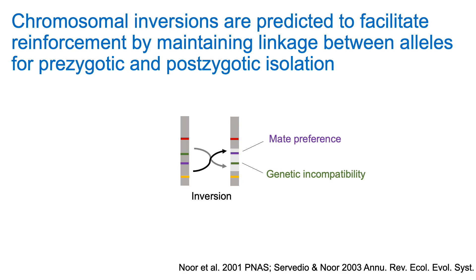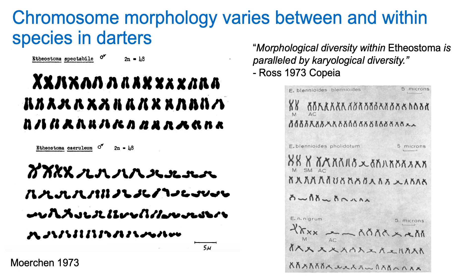Theory predicts that chromosomal inversions could play a particularly important role in promoting reinforcement by maintaining linkage between alleles associated with prezygotic and postzygotic isolation — like mate preference and genetic incompatibilities — and empirical investigations testing this prediction have been rare. There is good reason to suspect that chromosomal rearrangements underlie genetic incompatibilities in darters because chromosome morphology varies between and within species. For example, the number of metacentric and acrocentric chromosomes present differs between orange-throat and rainbow darters, and variation in chromosome morphology has been observed even among populations within rainbow darter species.